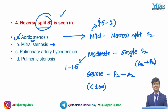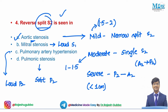In mitral stenosis the characteristic finding is loud S1 with mid-diastolic murmur. In pulmonary hypertension you have loud P2. In pulmonary stenosis you have soft P2. In aortic stenosis, apart from reversed split, A2 is also soft. So reversed split S2 is seen in severe aortic stenosis.